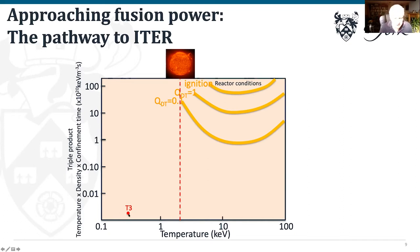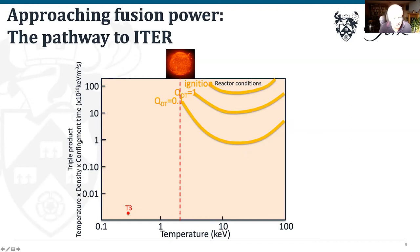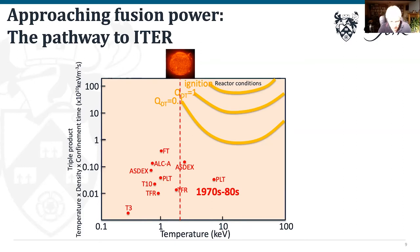Progress history: the first tokamak, T3, was designed by the Russians in the 1960s and sat four orders of magnitude below where we need to be. The rest of the world built slightly bigger machines — Asdex in Germany, PLT in the US, TFR in France, T10 in Russia — gaining a factor of ten improvement in the 1970s. In the 1980s and 90s came machines still operating today: JET in the UK, DIII-D in the US, Asdex Upgrade in Germany.